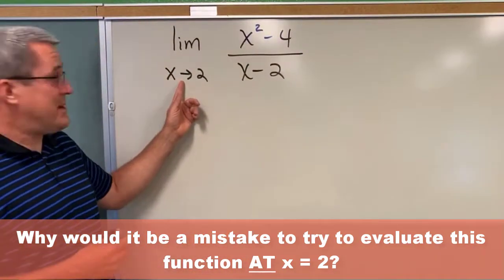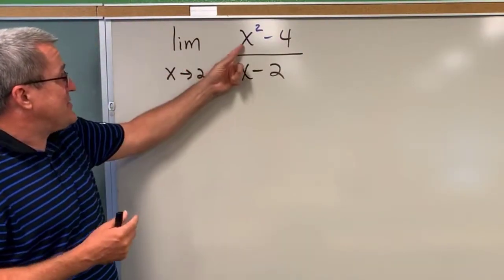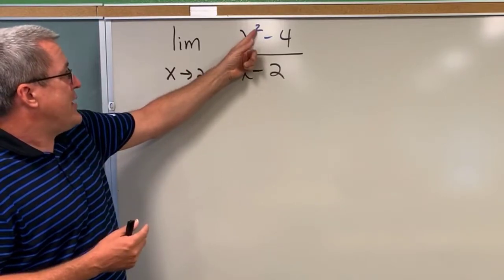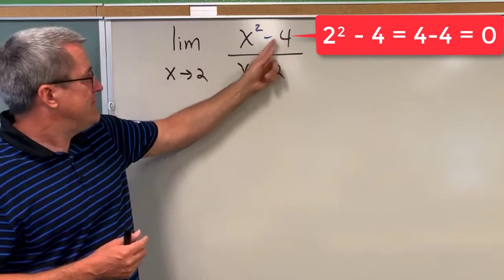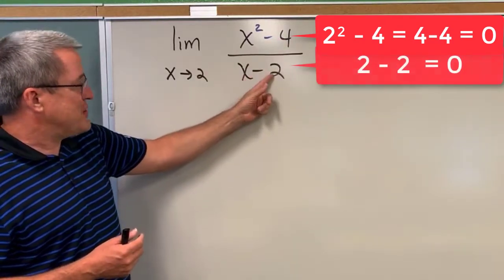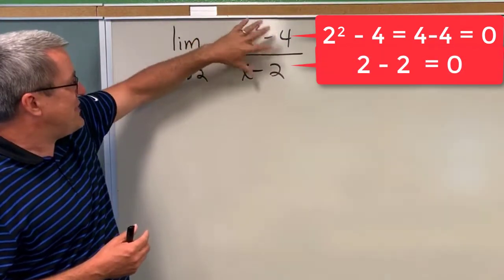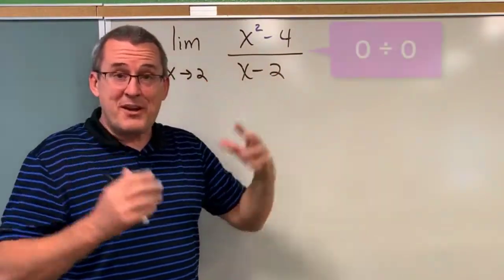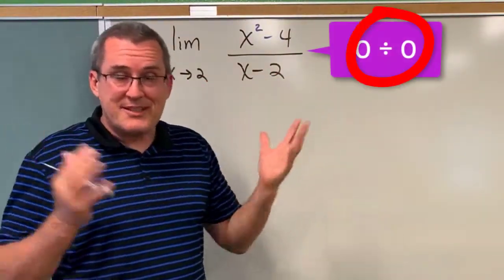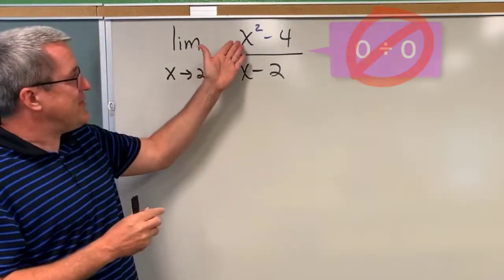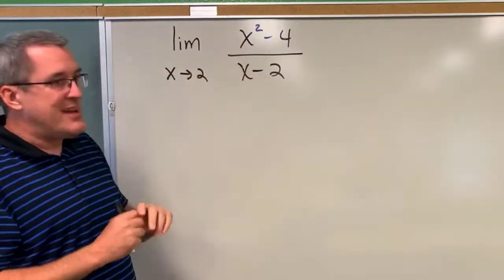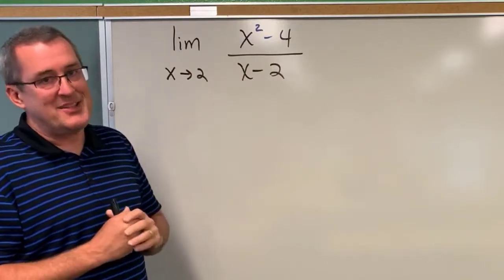So this is why this would be a mistake. If we thought x was equal to 2, 2 squared is 4, 4 minus 4 would be 0. If x was 2, 2 minus 2 would be 0. And this rational function would just produce the indeterminate form 0 over 0, which does not help us at all. Instead, we want to examine this function and think what's happening nearby x equals 2.